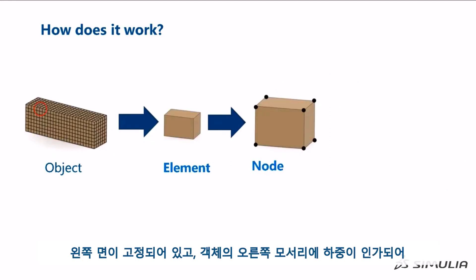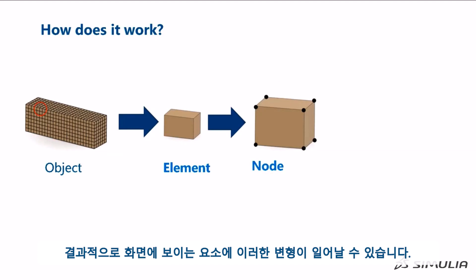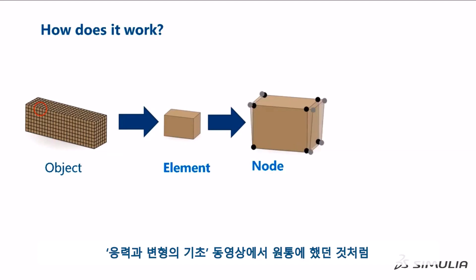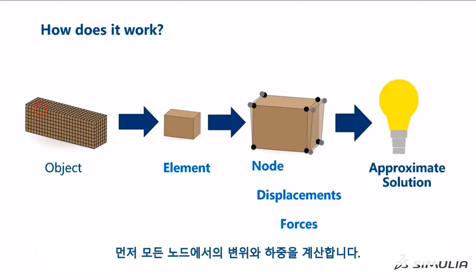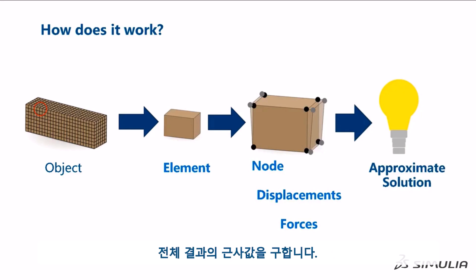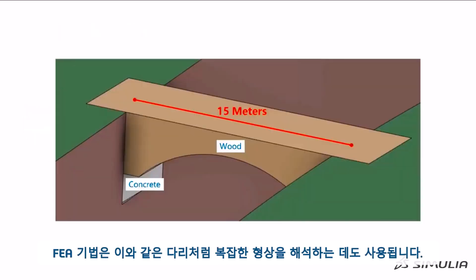With the left face fixed and the load applied to the right edge of the object, the highlighted element might deform like this. We can perform calculations, similar to those that we did for the cylinder in the Basics of Stress and Strain video. We calculate the displacements and forces for every node. We then combine the forces and displacements for all the elements to approximate the overall result. We can also use the FEA process to analyze complex shapes, like this bridge.